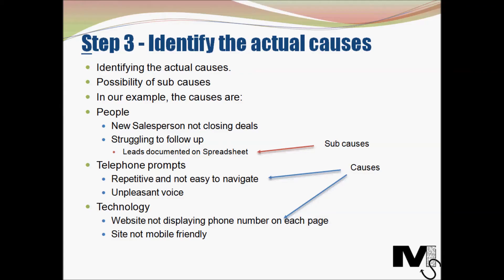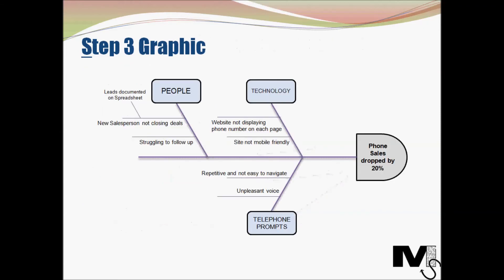The next cause category is technology. The causes here are: the website is not displaying phone numbers on each page, and the site is not mobile friendly. We then map all the causes and sub-causes onto the skeletal structure, which completes the creation of the fishbone diagram.